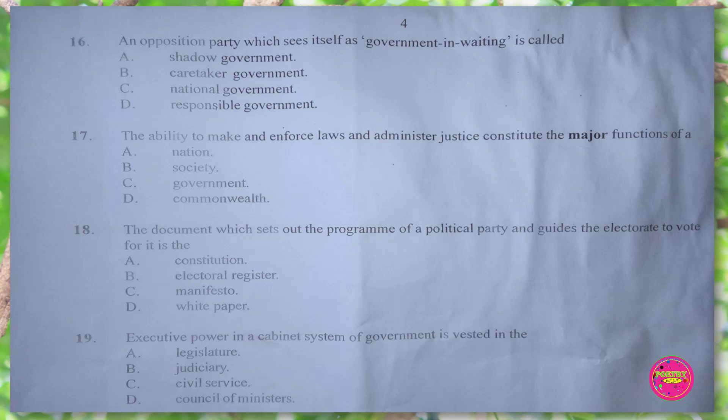Question 18. The document which sets out the program of a political party and guides the electorate to vote for it is their: A. constitution, B. electoral register, C. manifesto, D. white paper. The correct answer is C. manifesto.